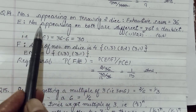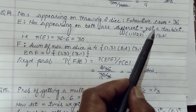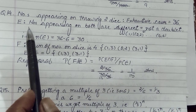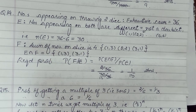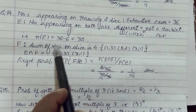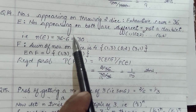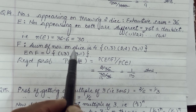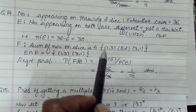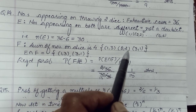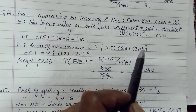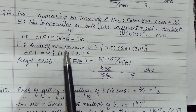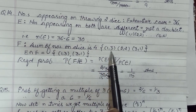Event E: entries are different, not a doublet. Out of 36, there are 6 doublets, so 30 outcomes are favorable. The second event F is that the sum of numbers on the dice is 4. The sum 4 can come from: 1+3, 2+2, and 3+1. Since 4 and above have minimum sum exceeding these, only these 3 favorable outcomes give a sum of 4.